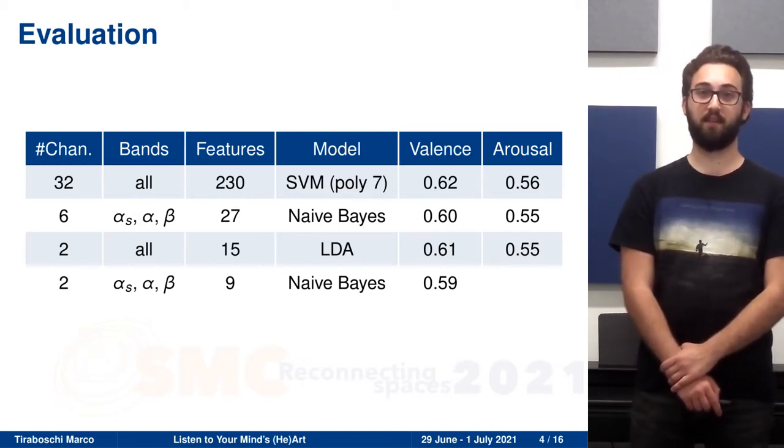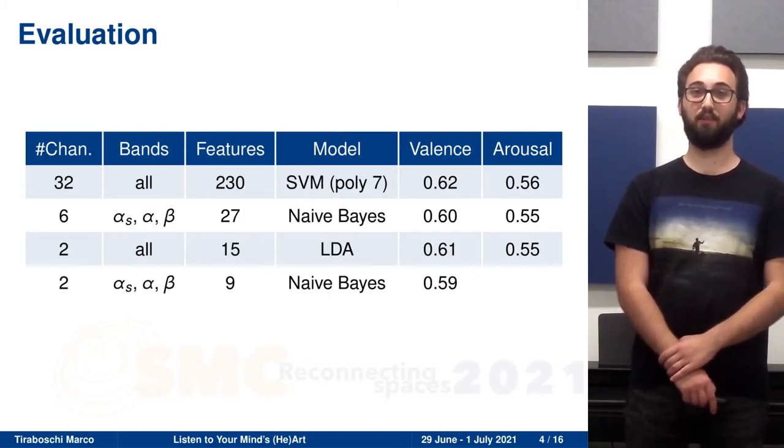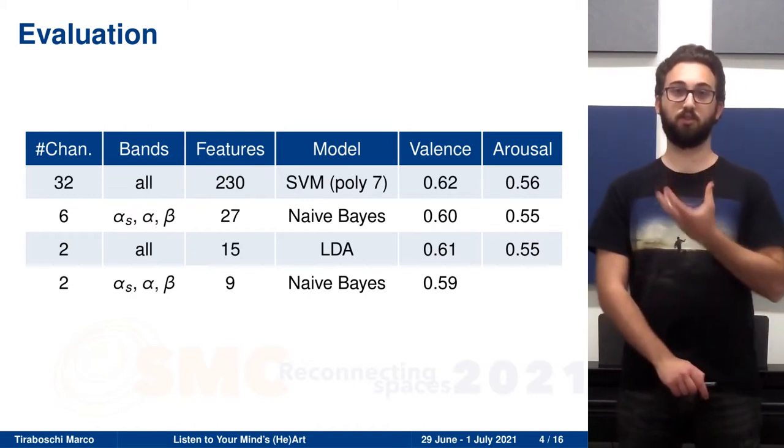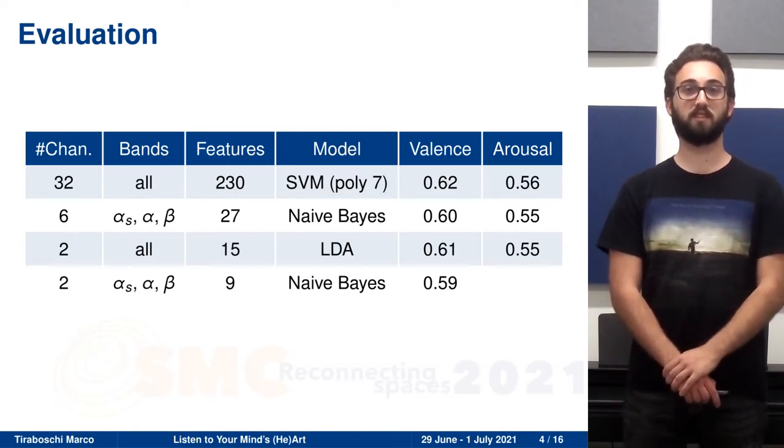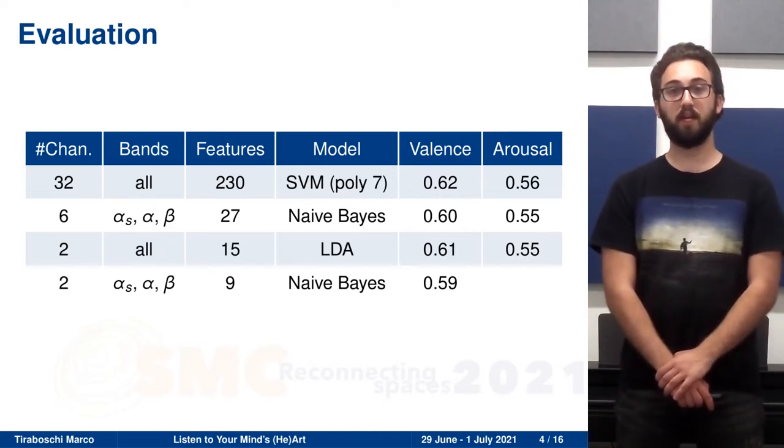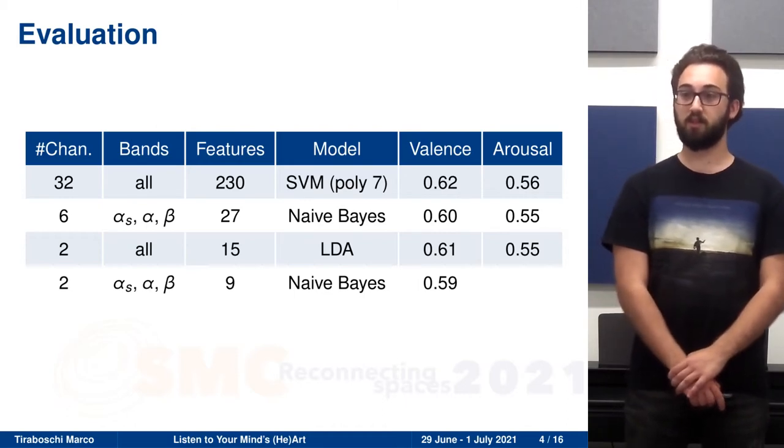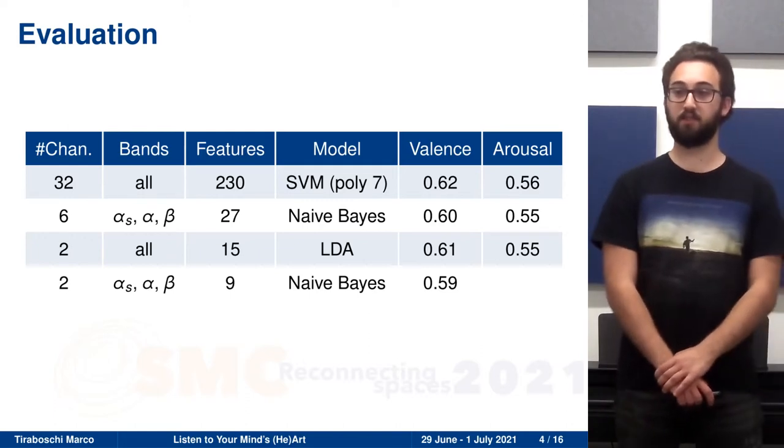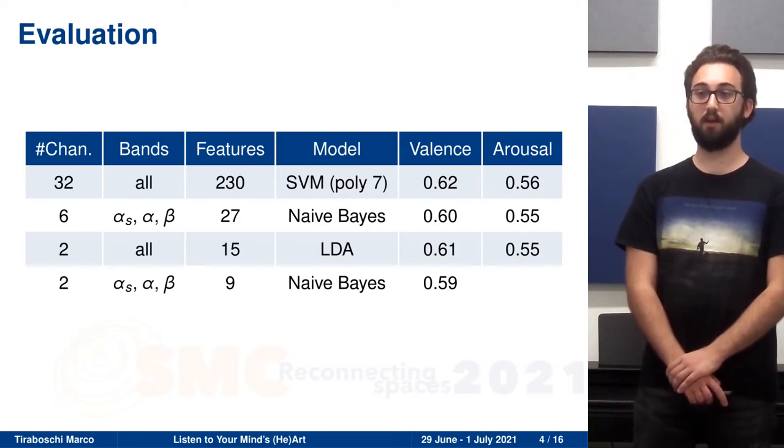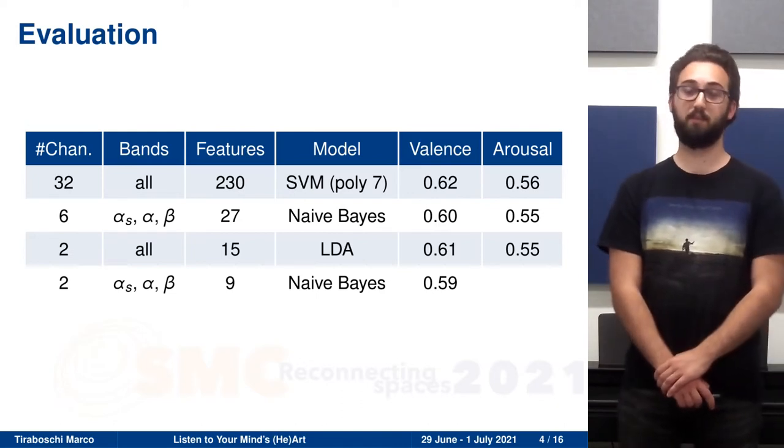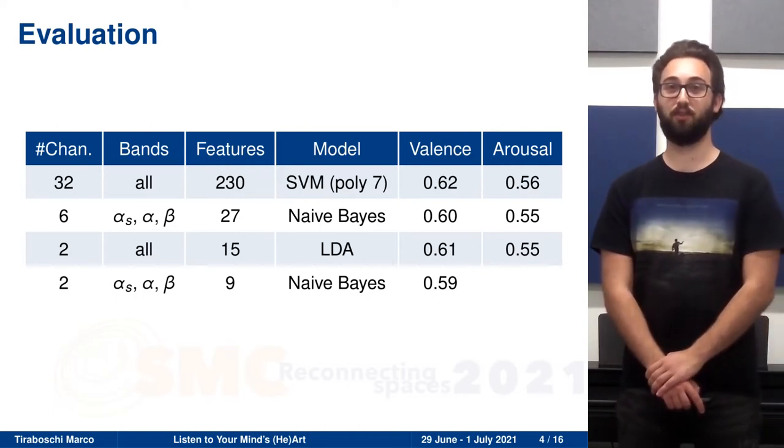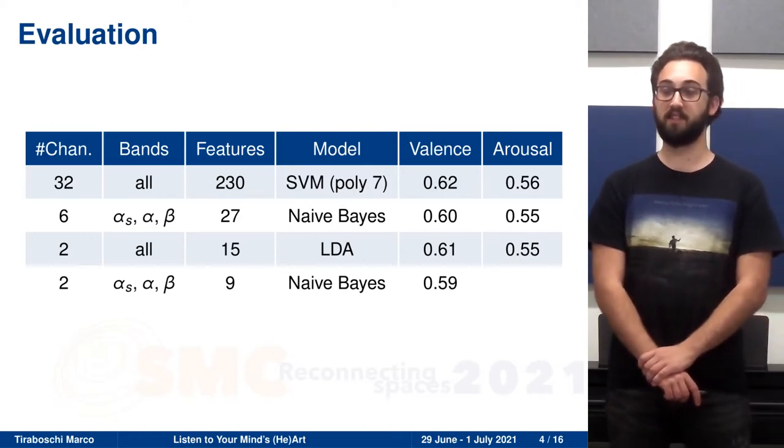So we tried with six EEG channels and we also used just the frequency bands that are more reliable. Low frequencies are influenced by muscle noise, so noise from the muscles in the user's face. And high frequencies can sometimes be influenced by the power line interference. And we found out that with a naive Bayes classifier, we could get almost the same results. So with the full feature set, we had a 62% F score for valence and a 56% F score for arousal classification. With only six channels and three frequency bands, we had 60% F score for valence and 55% F score for arousal. So it is a reduction of one order of magnitude from the number of features. So this is a significant result.